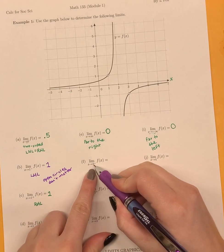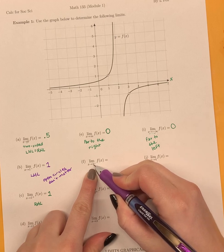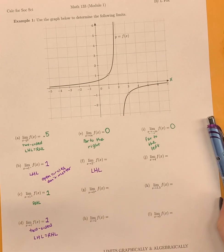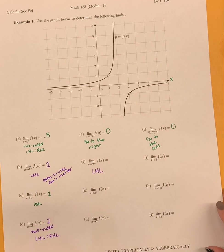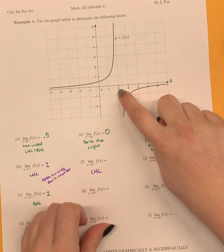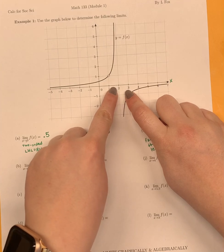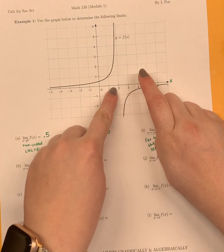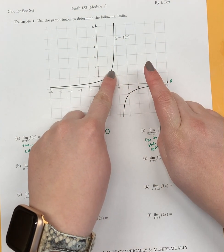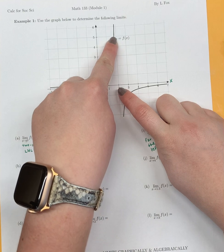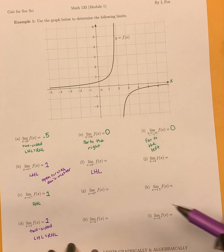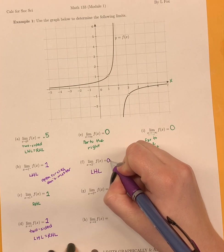Continuing, we have the limit as x goes to 2 from the left side — a left-hand limit. Right off the bat, my answer is not going to be DNE because it's not a two-sided limit. Here's 2 on the graph; I want to come in just to the left of 2, maybe at 1.5. I find where the graph is to the left of 2 and follow it toward x equals 2 to see where the y value is headed. It is going up and up without bound, so that left-hand limit is going to positive infinity.